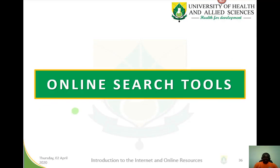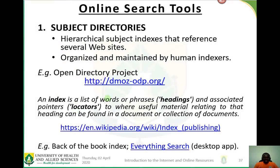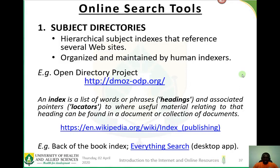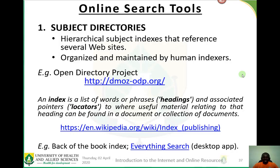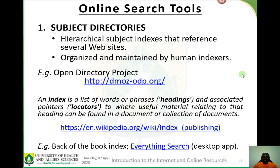The first tool to look at is subject directories. Subject directories are simply indexes compiled by human subject experts in a particular field. For example, those with expertise in medicine and the health sciences will index particular web pages they consider credible for students, practitioners, professionals, or policy makers visiting issues of health and biomedicine.